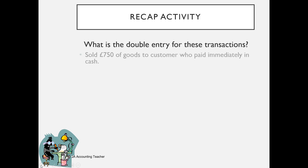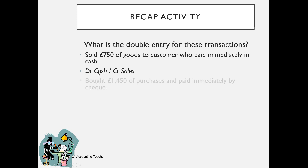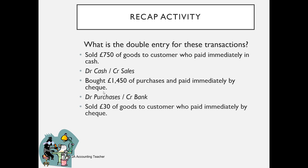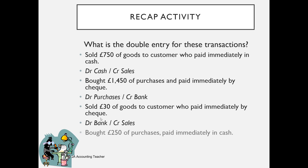Let's work through some cash transaction examples. Sold £750 of goods to a customer who paid immediately in cash: debit cash, credit sales. Bought £1,450 of purchases paid immediately by cheque: debit purchases, credit bank. Sold £30 of goods to a customer who paid by cheque: debit bank, credit sales. Bought £250 of purchases paid immediately in cash: debit purchases, credit cash, because we've reduced that asset.